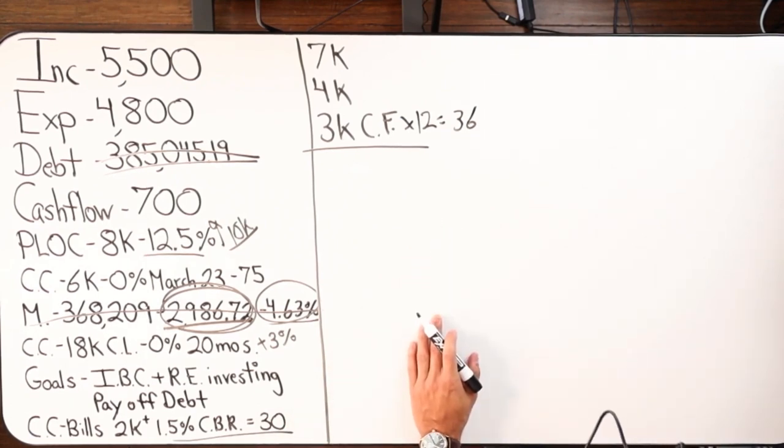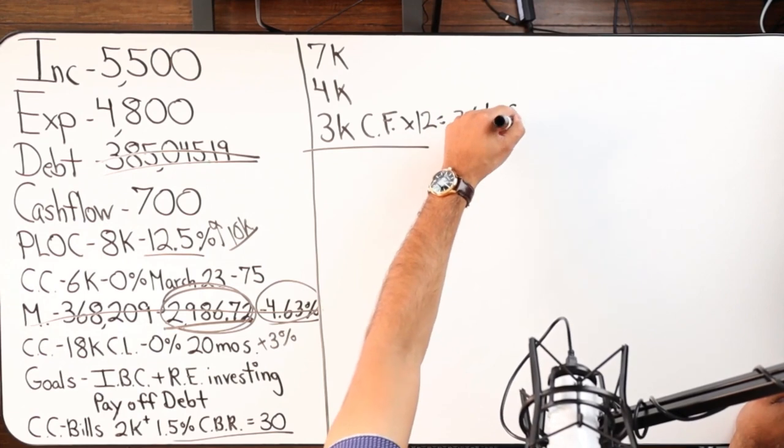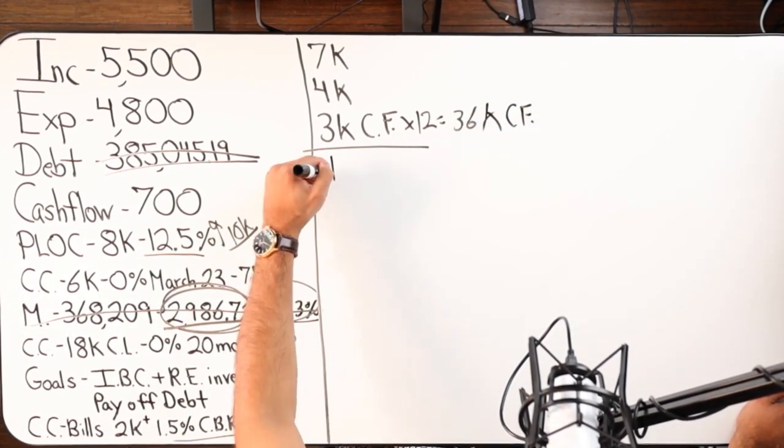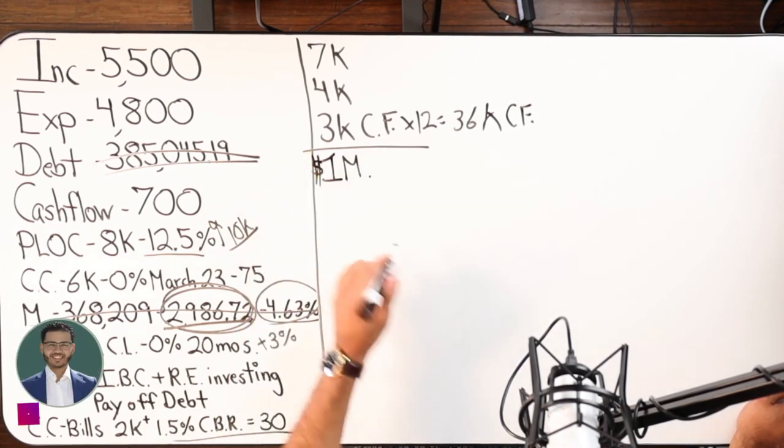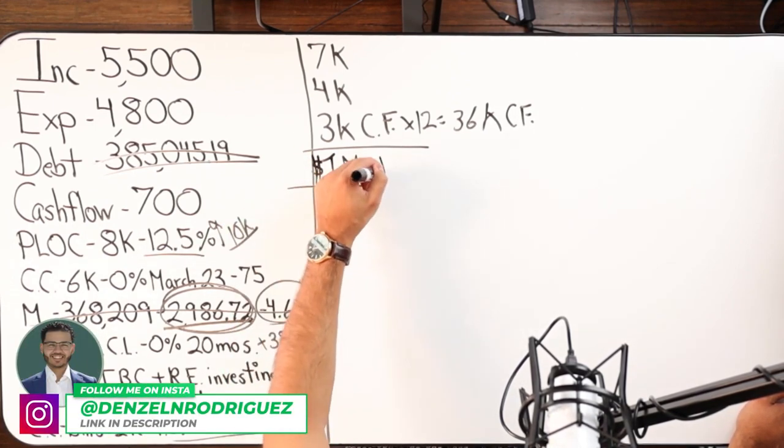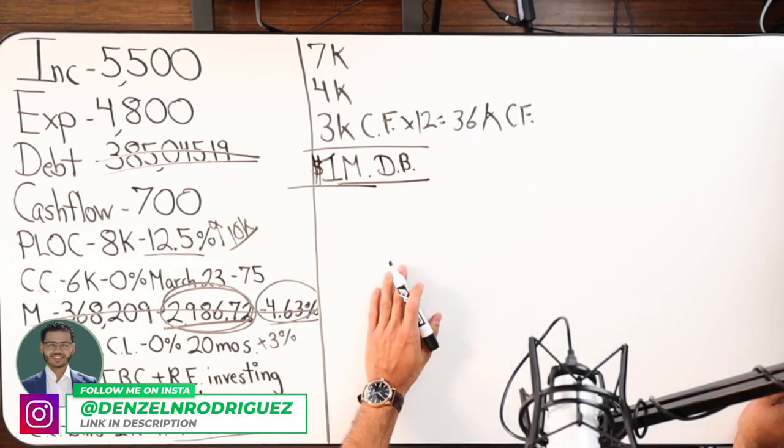Three times twelve is thirty-six—that's how much cash flow I make per year as is. And I just walked into $1 million completely tax-free inherited. Let's say it came from life insurance, the death benefit, completely tax-free, $1 million in my name.